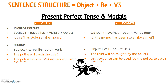With modals — can, could, will, shall, should and so on — we use the modal plus 'be' plus the past participle (verb three). For example: 'The police will catch the thief' becomes 'The thief will be caught by the police.' And 'The police can use DNA evidence to catch the thief' becomes 'DNA evidence can be used to catch the thief.' So with modals: modal + be + past participle.